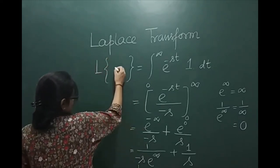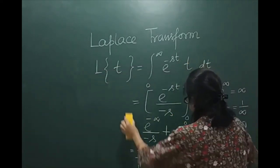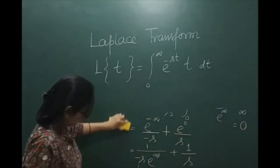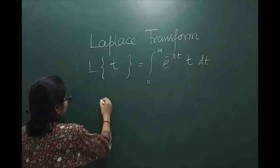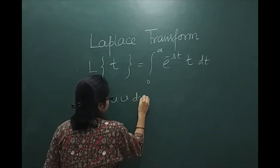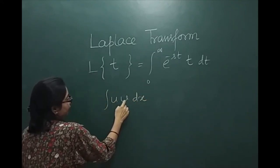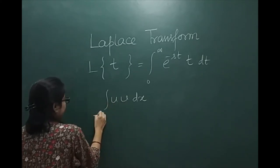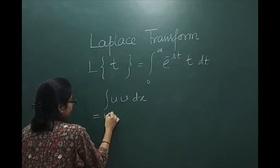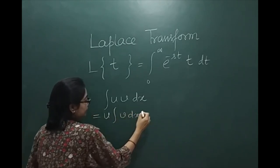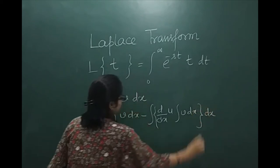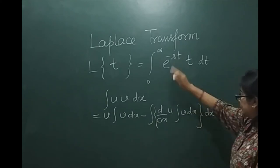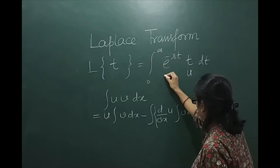Next, let us take f(t) = t, so f(t) will be changed to t. As we know, integration of a product of two functions u and v with respect to x is: u times (integral of v dx) minus the integral of (d/dx of u) times (integral of v dx), all with respect to x. Here we have t and e^(-st), so let us take t as u and e^(-st) as v. We use LIATE — L is logarithm, I is inverse, A is algebra, T is trigonometry, E is exponential — so u is the algebraic term t and v is the exponential term e^(-st). Thus t is the first function and e^(-st) is the second function.